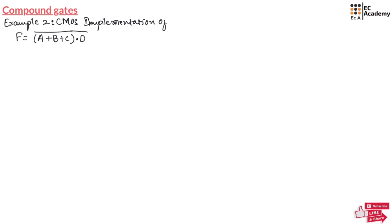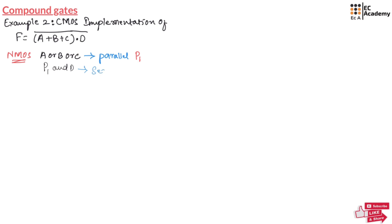Let us take a second example, where we need to implement a Boolean function using CMOS logic. First let us implement using NMOS. Here A OR B OR C can be implemented using a parallel connection of NMOS — let us call this P1. This OR function then has an AND operation with D, so P1 and D can be implemented using a series combination of NMOS. To implement using PMOS, A OR B OR C can be implemented in series — let us call this S1. Then S1 and D can be implemented using a parallel combination of PMOS.